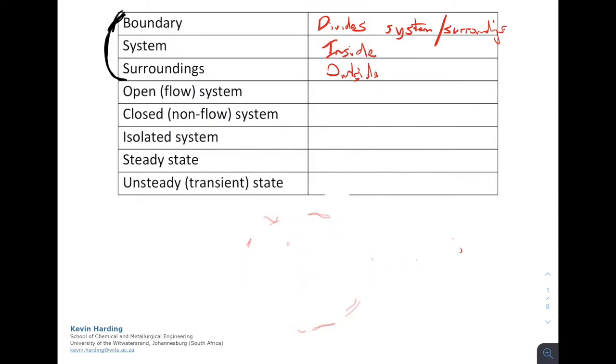The next section that I want to look at is going to be the open, the closed, and the isolated system. So we've just said that a system has some defined boundary, just a random circle, oval shape. And the system is going to be what is inside.